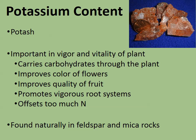Potassium — we call it potash, and its chemical symbol is K. It's important for the vigor and vitality of the plant, carries carbohydrates to the plant, and improves flower color and fruit quality. It can also offset too much nitrogen: if you have too much nitrogen, tomatoes will grow super tall and green and bushy but won't produce much fruit. Add a little potassium, and it negates that nitrogen so you start getting tomatoes. Potassium is found naturally in feldspar and mica rocks.